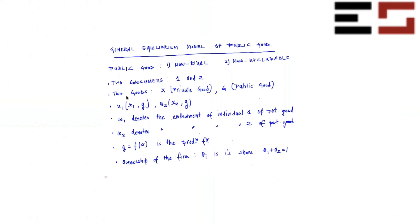Okay, so that's pretty much it — that describes the complete environment. Now we can proceed and talk about questions like what is feasible in this economy, how to represent the set of all feasible allocations in a graph, and what is competitive equilibrium in this economy.